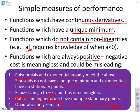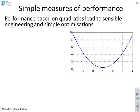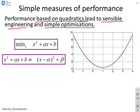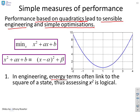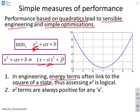So what we end up with is performance based on quadratics leads to sensible engineering and simple optimisations. So there's a typical quadratic, and what do you notice, lots of good things. In engineering, energy terms often link to the square of a state, and a quadratic has a square in it. It could be an x squared or an x minus alpha squared. So it makes good engineering sense to weight things like x squared terms.